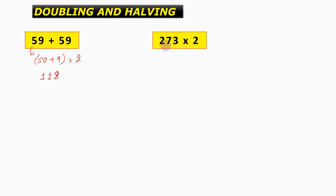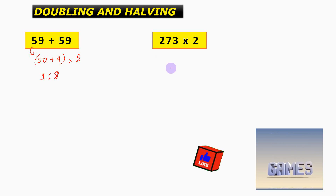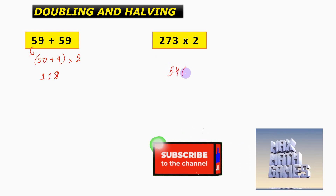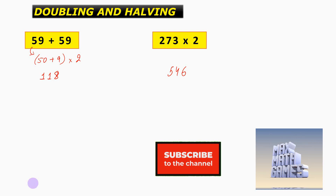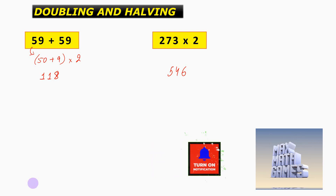The next question is 273 into 2. Now 273 can be written as 270 plus 3. When 270 is multiplied by 2 it gives us 540, and 3 when multiplied by 2 gives us 6. So all we need to do is add 540 and 6, which we can do mentally, and that will give us the answer as 546. I am not even going to write down the steps because I believe that you can do this mentally.